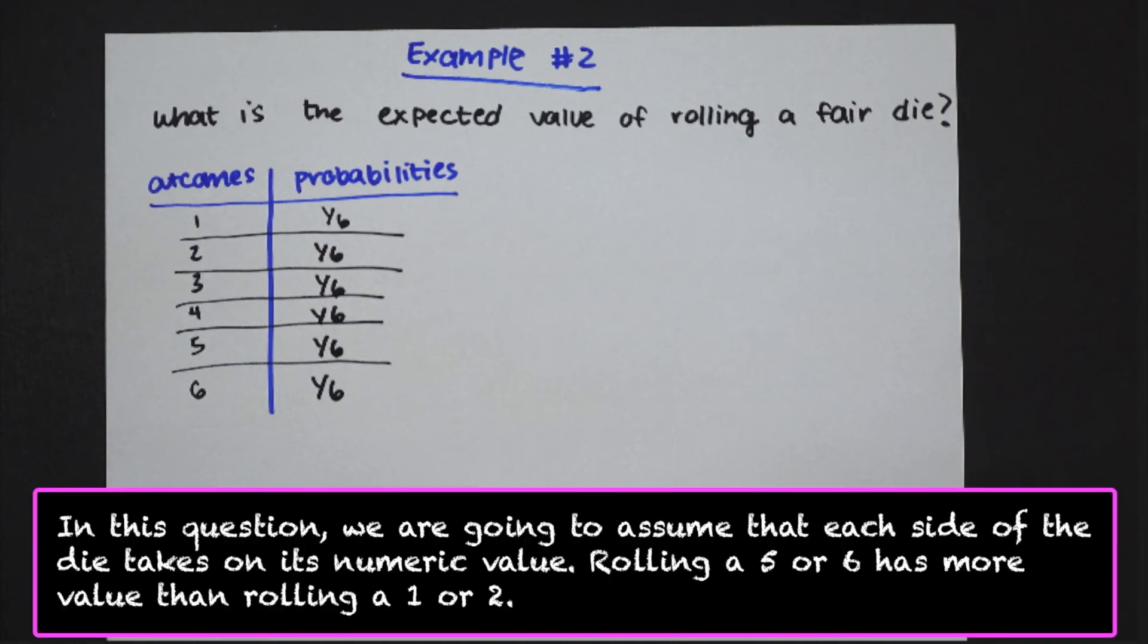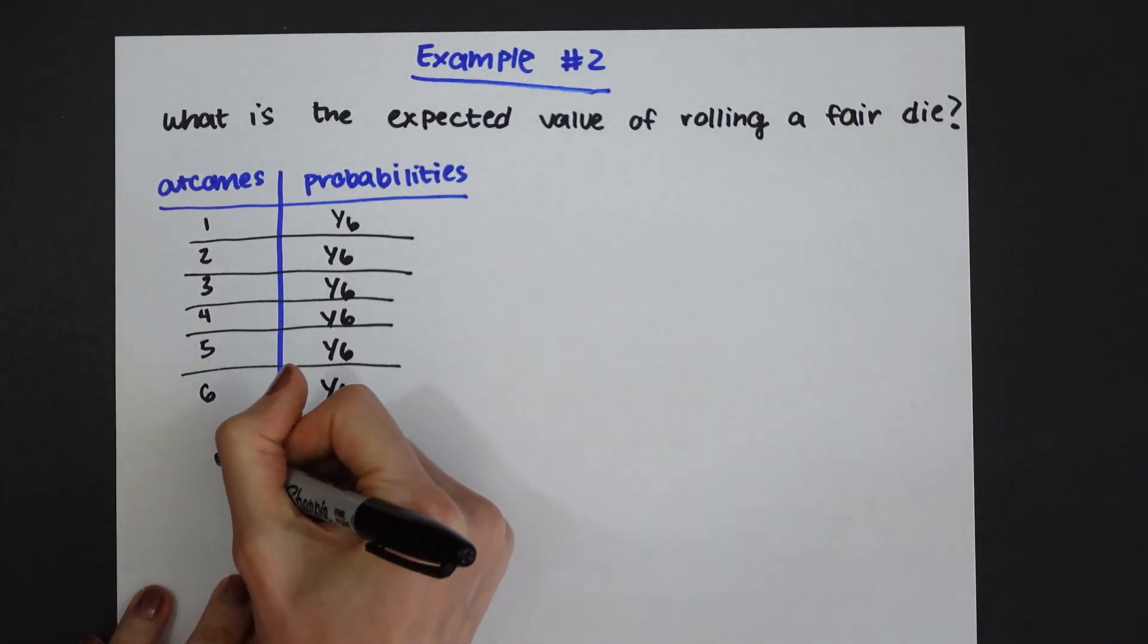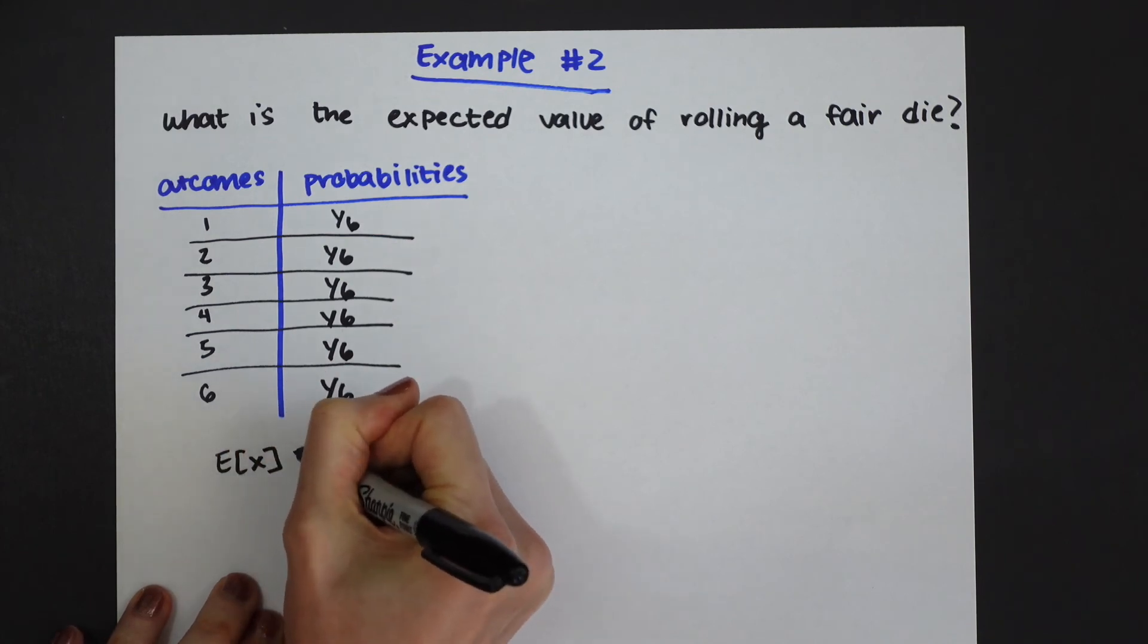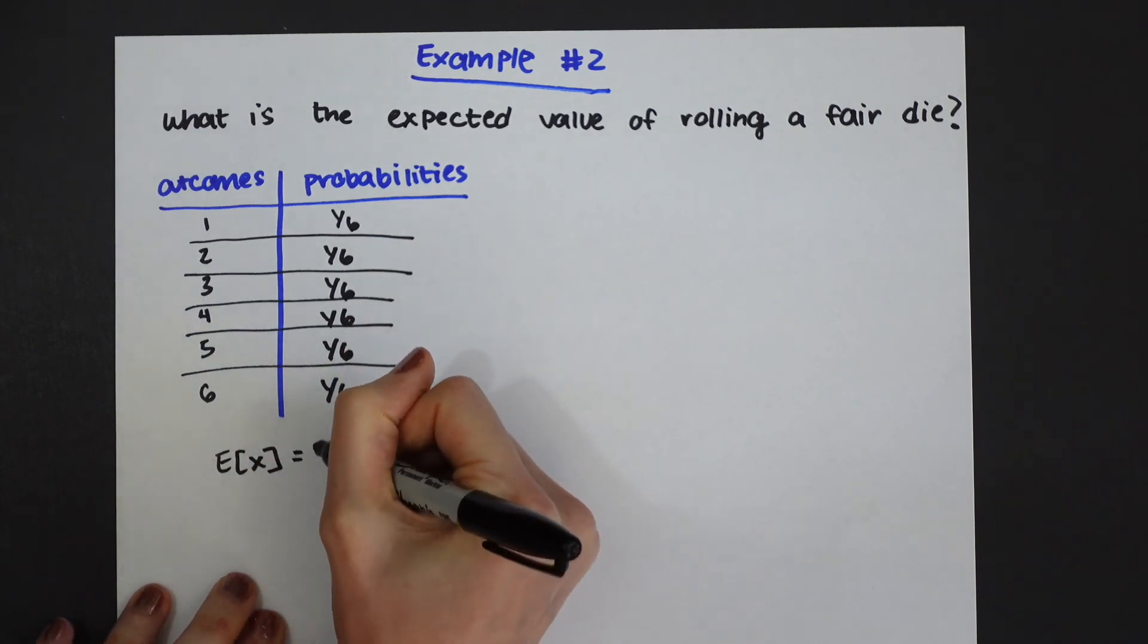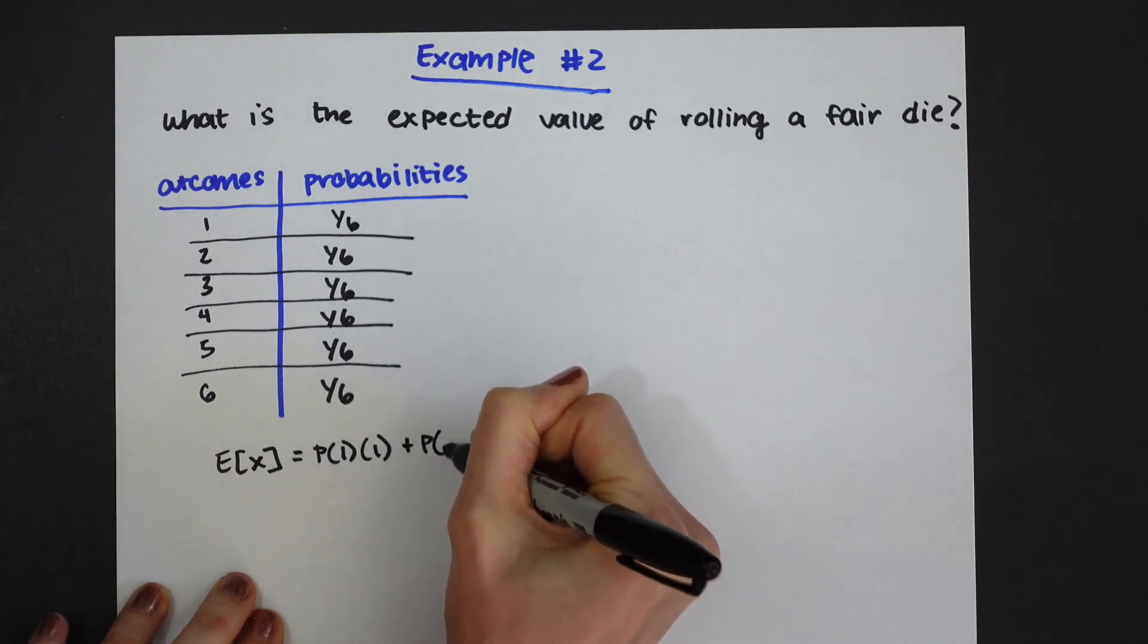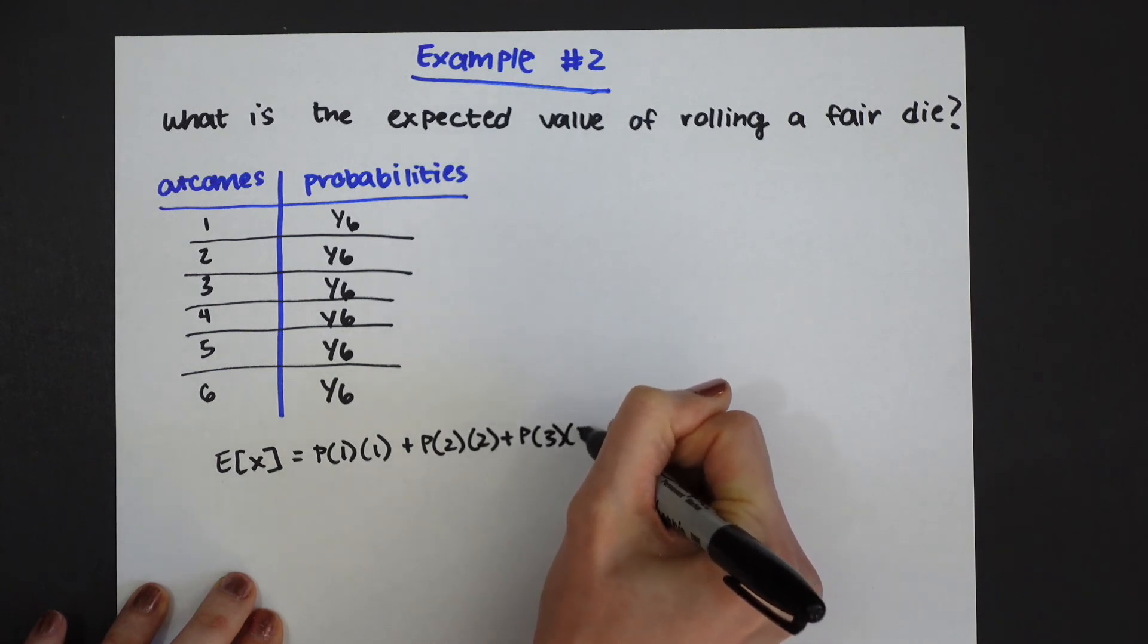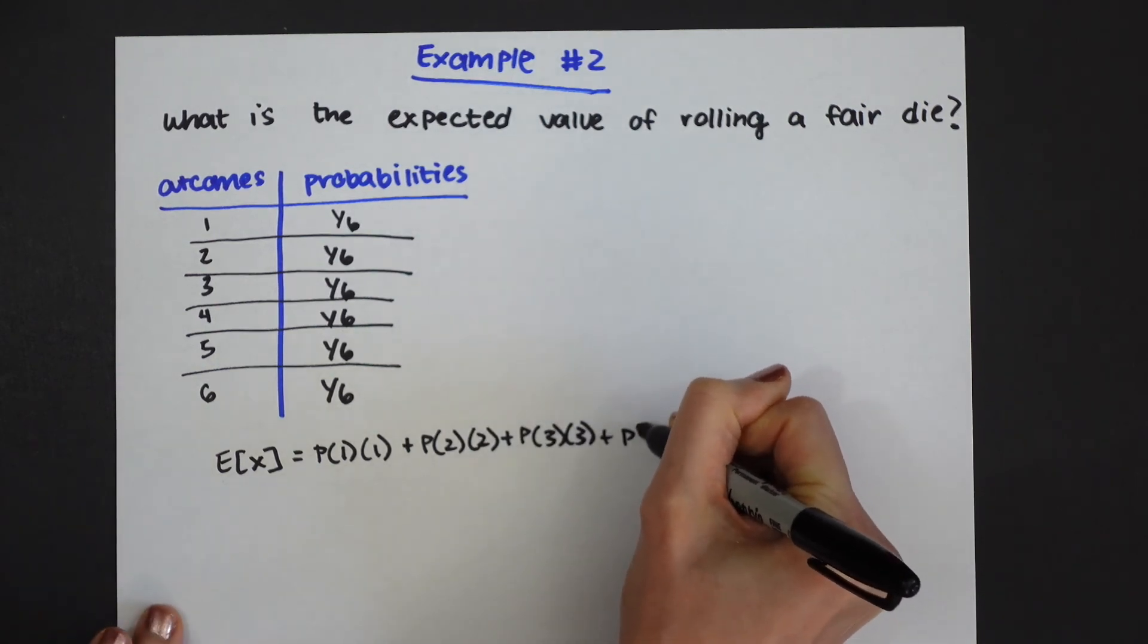Now when we write the expected value we're going to be assuming that each side of the die takes on its numerical value, meaning that a five and six are worth more than a one or a two. So now let's write out the expected value formula pertaining to this question. We want the probability of rolling a one and the value of one. We want the probability of rolling a two and the value of two and we're going to do this all the way through.